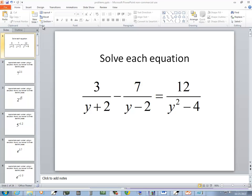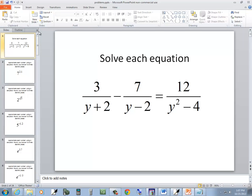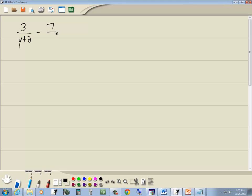In this problem, we want to solve this rational equation. We've got 3 over y plus 2 minus 7 over y minus 2 is equal to 12 over y squared minus 4.